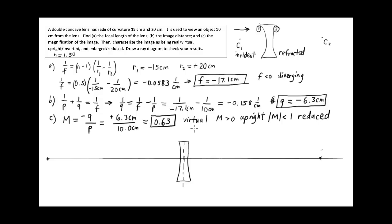For the object, on the same scale the object is 10 centimeters from the lens, which is a little more than halfway to the focal point. We draw an upright arrow with one end on the optical axis and the tip of the arrow at the top. That's the object. Now we're ready to draw the principal rays.